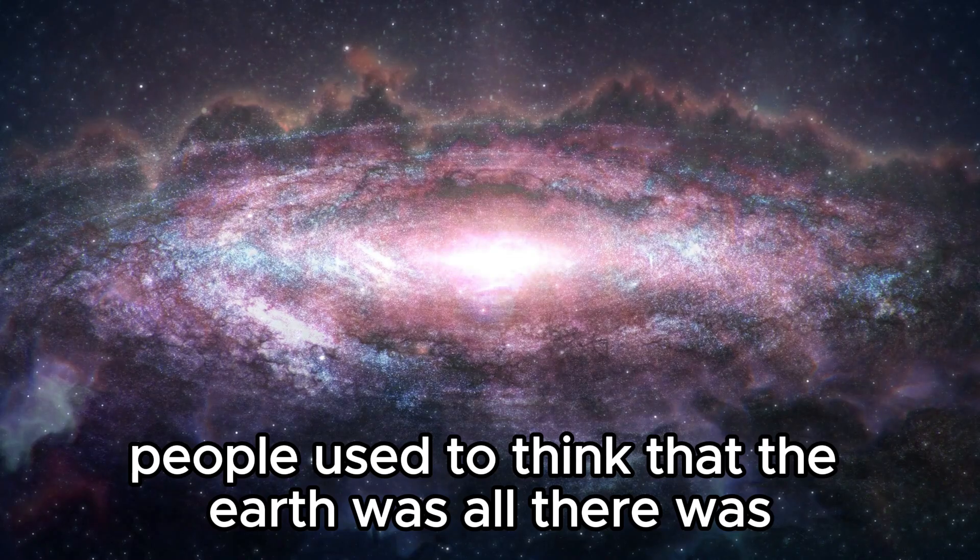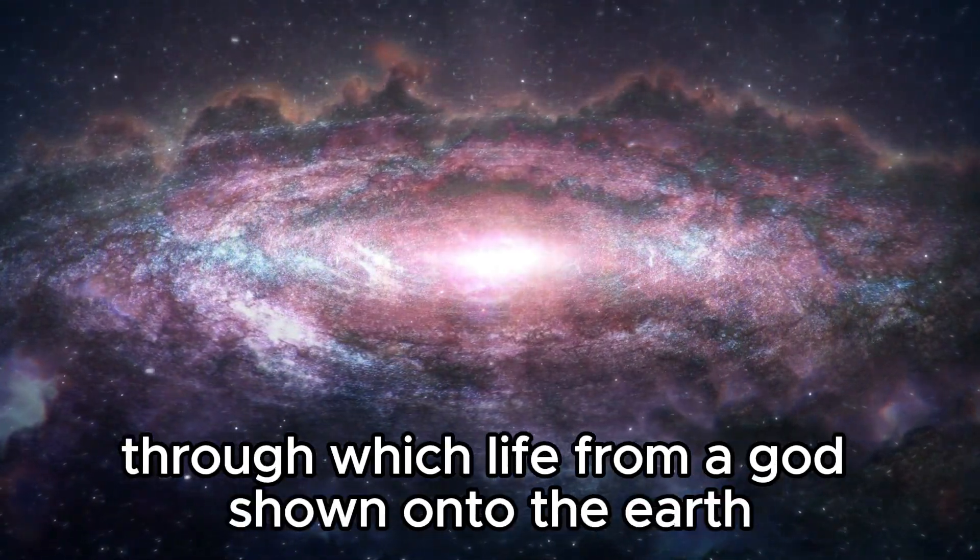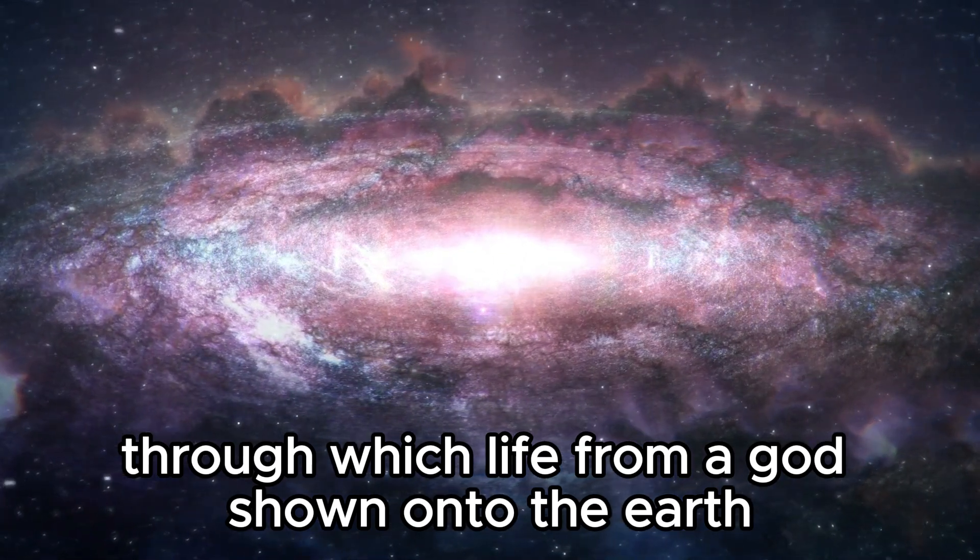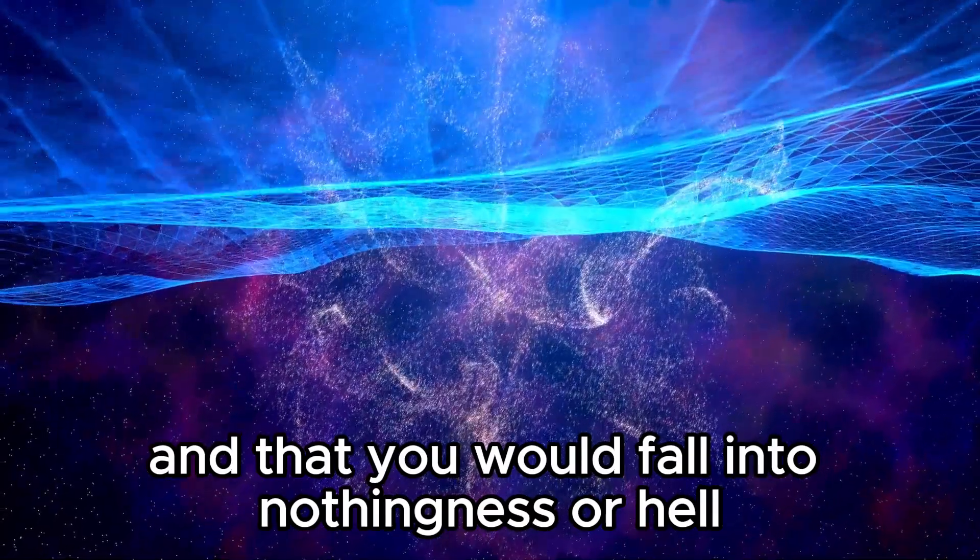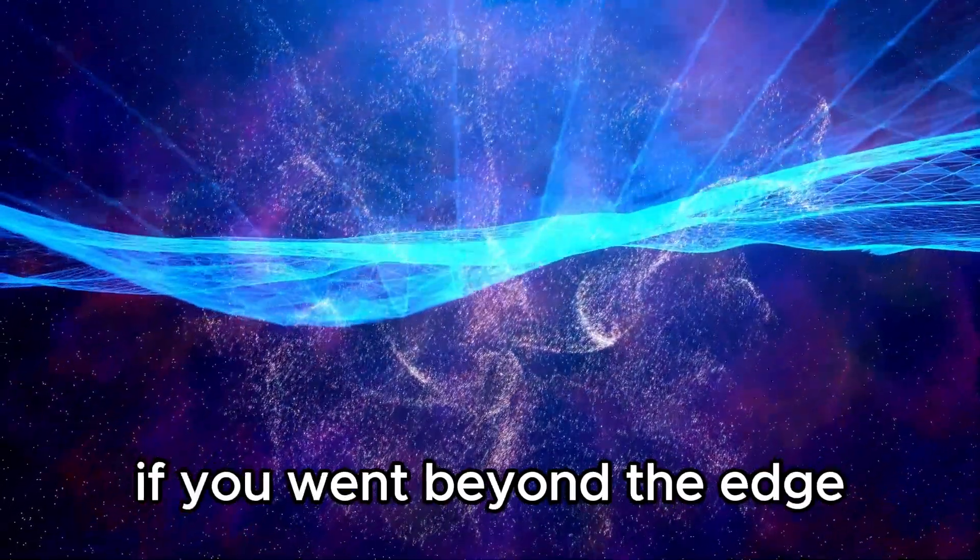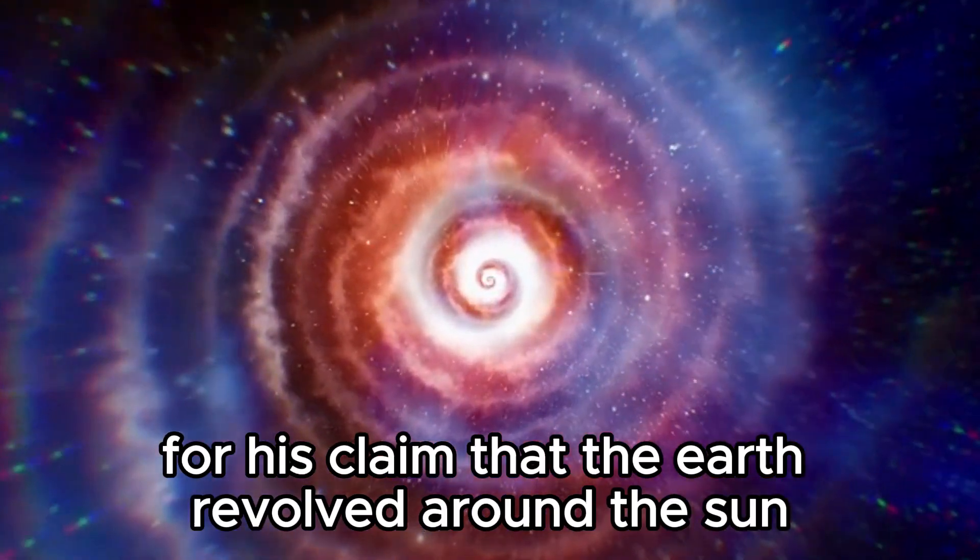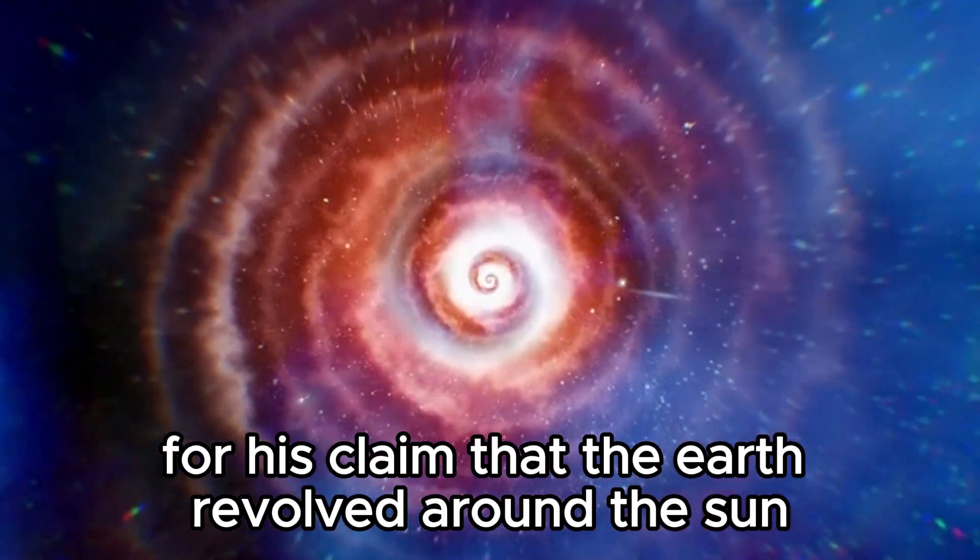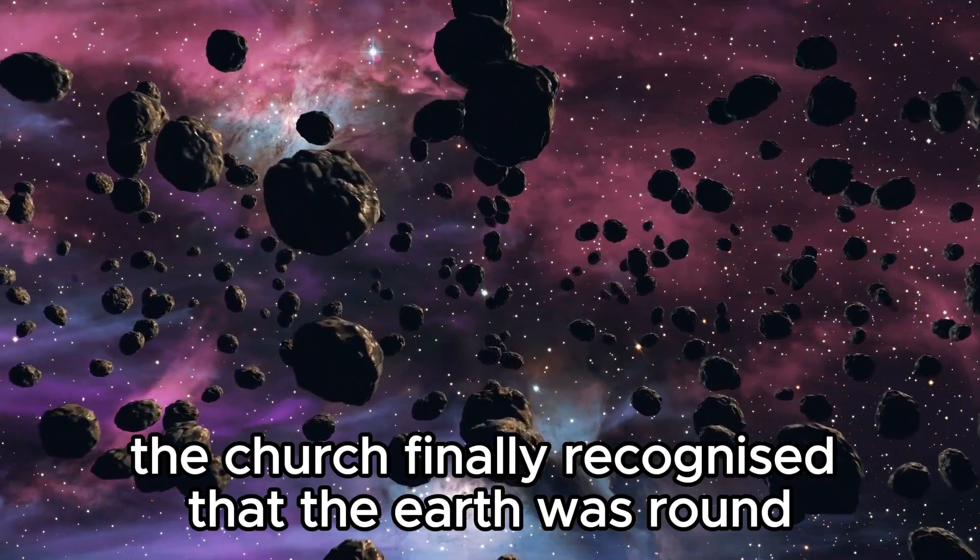People used to think that the earth was all there was and that the sun was a hole in the sky through which life from a god shone onto the earth. Then, people thought that the earth was a disk and that you would fall into nothingness or hell if you went beyond the edge. Galileo Galilei was put under house arrest in the 17th century for his claim that the earth revolved around the sun, and some centuries later, the church finally recognized that the earth was round.